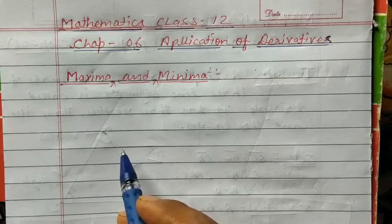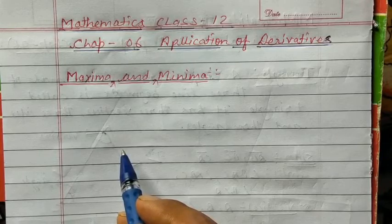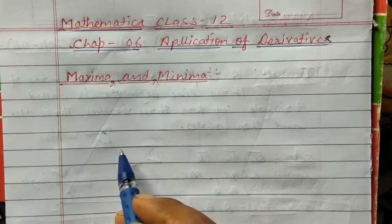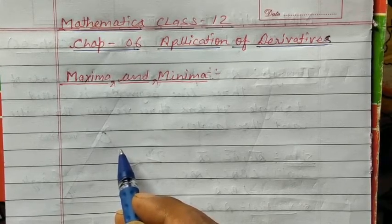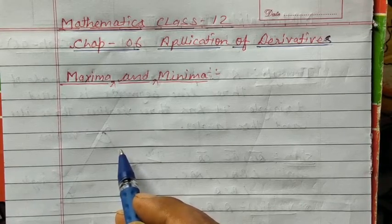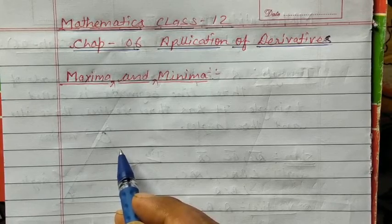We will find the turning points of the graph of a function, and then find the point at which the graph reaches its highest value locally or its lowest value. We will also find the absolute maximum and absolute minimum value of this function.